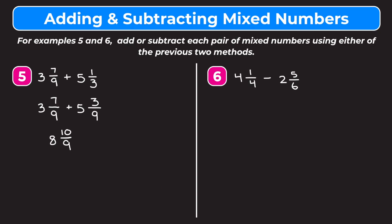We have an improper fraction within our mixed number, so we're going to have to break up that improper fraction and turn it into a mixed number. 8 and 10 ninths is really the same as 8 plus 10 ninths. 9 goes into 10 one time and there's a remainder of 1, so 10 ninths is the same as 1 and 1 ninth. Now we combine 8 plus 1 and 1 ninth. So 8 plus 1 is 9. We get 9 as our whole number part and 1 ninth as our fraction part. So we get 9 and 1 ninth as the answer for number 5.